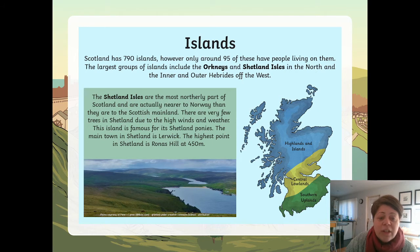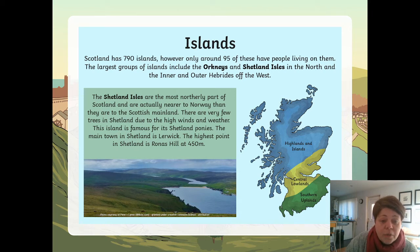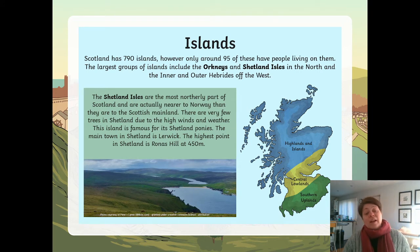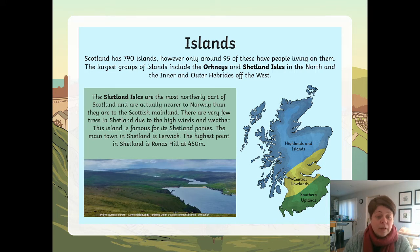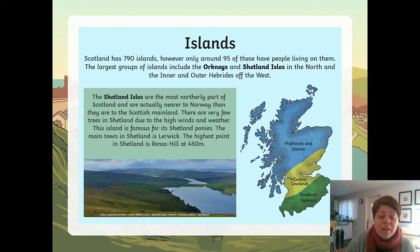Scotland has 790 islands; however only 95 of these have people living on them. The largest groups of islands include the Orkneys and Shetland Isles in the north and the Hebrides off the west. The Shetland Isles are the most northerly part of Scotland and are actually nearer to Norway than they are to the Scottish mainland. There are very few trees in Shetland due to the high winds and weather. The island is famous for its Shetland ponies. The main town in Shetland is Lerwick. The highest point in Shetland is Ronas Hill at 450 metres.